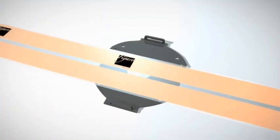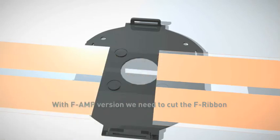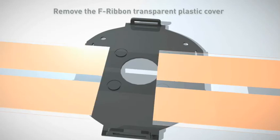With the F-Amp version we have to cut the F-ribbon in two separate pieces. This is a very important point of the installation because a wrong connection can damage Figaro or the sound quality. We strongly recommend that you remove the F-ribbon transparent plastic cover to make a correct connection. Do not cut all the F-ribbon.